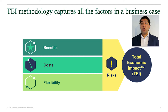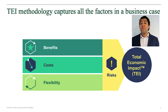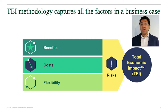TEI, short for Total Economic Impact, provides a holistic framework for technology investments. It is composed of four main elements: benefits, costs, risks, and flexibility for the future, with associated tools and methodologies for quantification. Individually, each provides only a piece of the decision support puzzle; together, they provide a holistic tool for assessing and justifying IT investments.